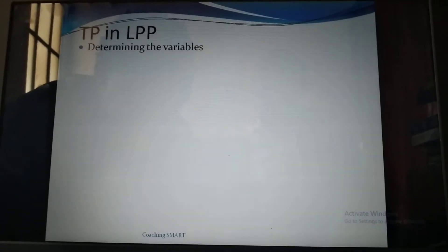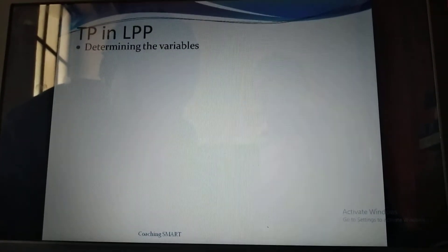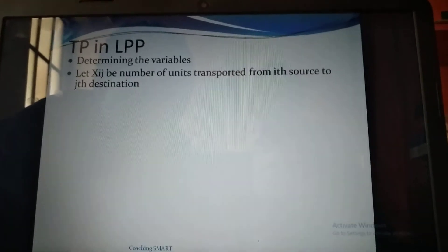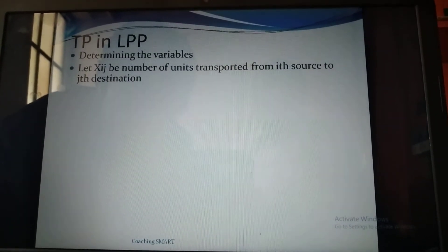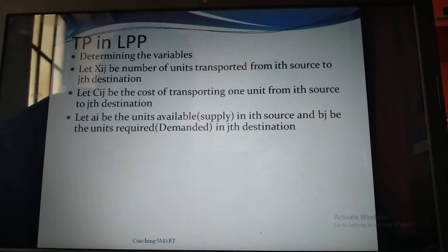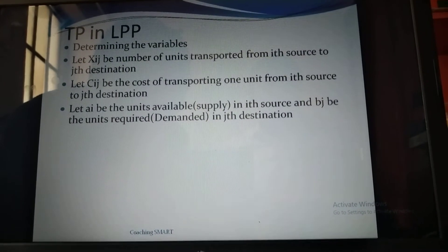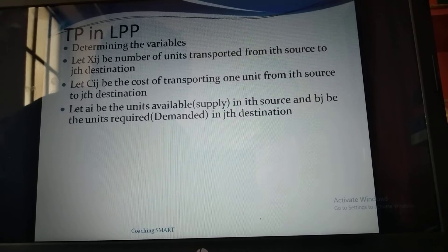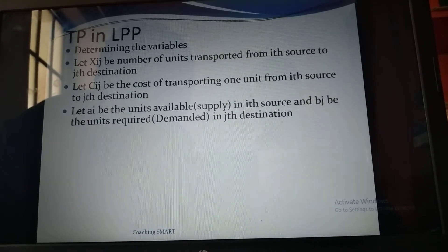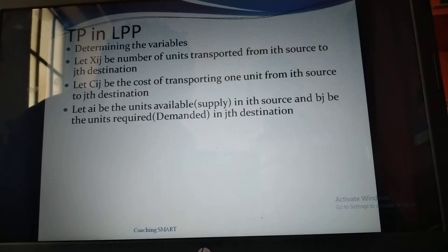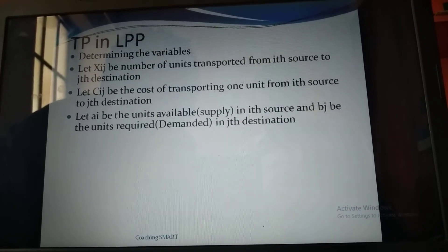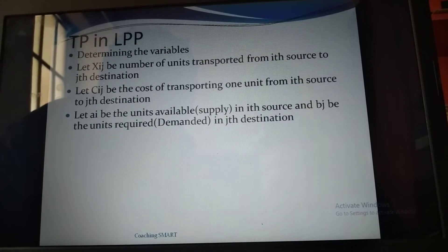Transportation problem in linear programming setting: first, determine the variables. Let Xij be the number of units transported from source i to destination j. Let Cij be the cost of transporting one unit from source i to destination j. Let Ai be the units of available supply at source i, and Bj be the units required (demanded) at destination j.